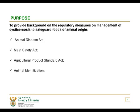Our purpose today is to provide the background on the regulatory measures on management of cystic cercosis to safeguard food of animal origin by administering the following acts: the Animal Disease Act, the Meat Safety Act at the slaughter level, the Agricultural Product Standard Act, and the Animal Identification Act.